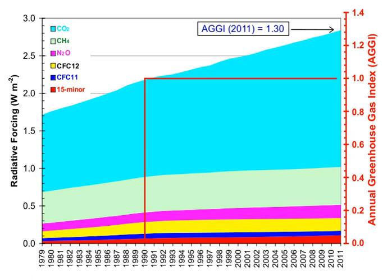Indirectly, human activity that increases global temperatures will increase water vapor concentrations, a process known as water vapor feedback. The atmospheric concentration of vapor is highly variable and depends largely on temperature, from less than 0.01% in extremely cold regions up to 3% by mass in saturated air at about 32 degrees Celsius.